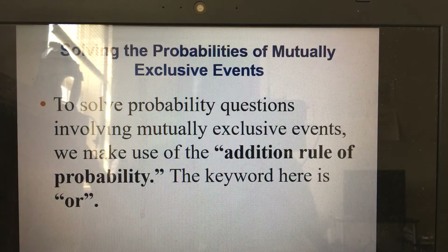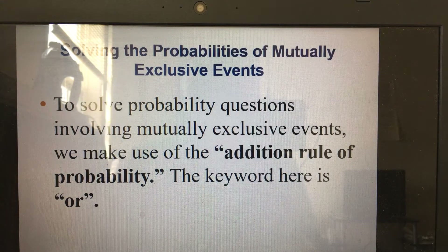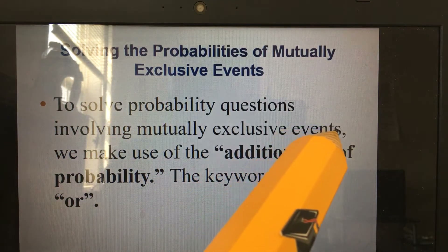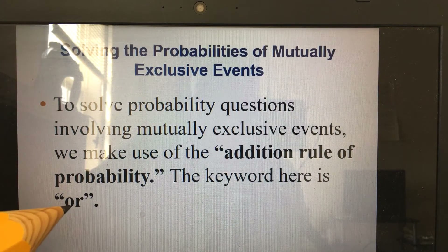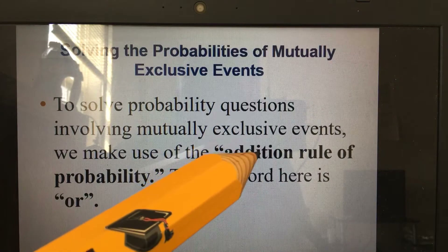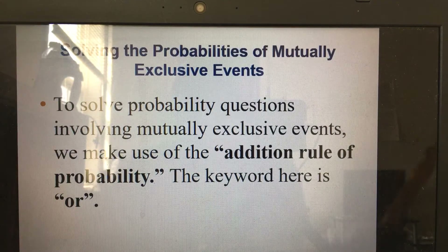Now let's look at how to solve probabilities of mutually exclusive events and also non-mutually exclusive events. In each case the keyword is 'or', and we use the formula called the addition rule of probability. Whenever the question contains the word 'or', that tells you automatically that you are going to use the addition rule — both for mutually exclusive and non-mutually exclusive events.